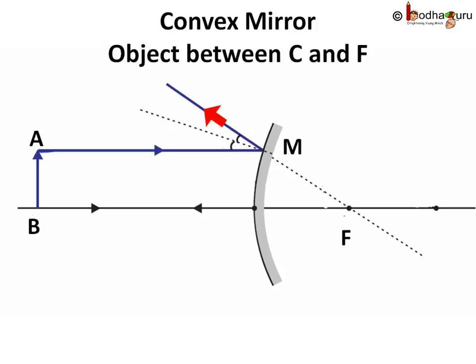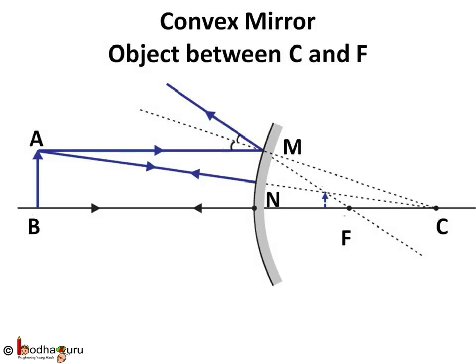Another ray from A lands on point N on the mirror. This ray is moving in the direction towards C, so it is actually perpendicular to the mirror at point N, because the radius of curvature is perpendicular to the tangent drawn at point N. This means the angle of incidence is 90 degrees, so the angle of reflection is also 90 degrees, meaning it will get reflected along AN.